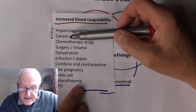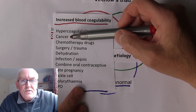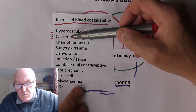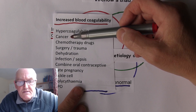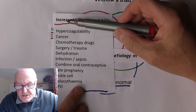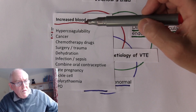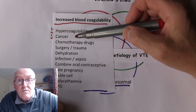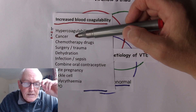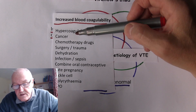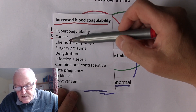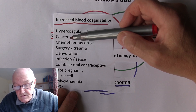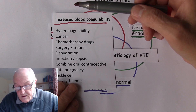One reason is cancer. In cancer, you get direct effects of the tumour, but you also get indirect effects — sometimes called paraneoplastic effects — and cancer will actually increase the coagulability of the blood. It's not uncommon that cancer actually presents as a DVT or a pulmonary embolism. So if a DVT or pulmonary embolism comes out of the blue in someone with no history or no obvious risk factors, it's always worth thinking about the possibility that it could be caused by a cancer.